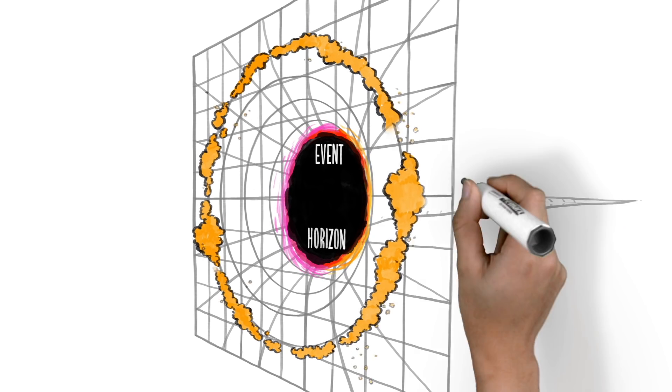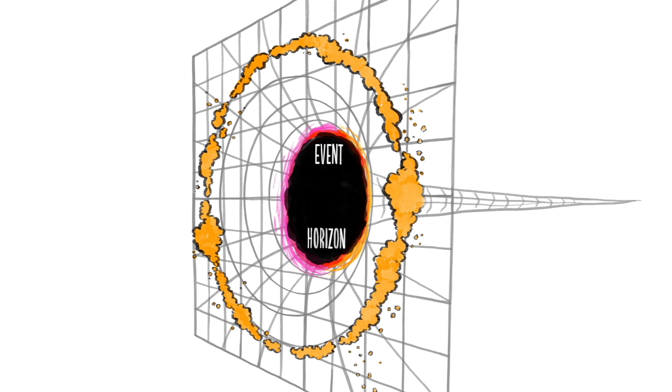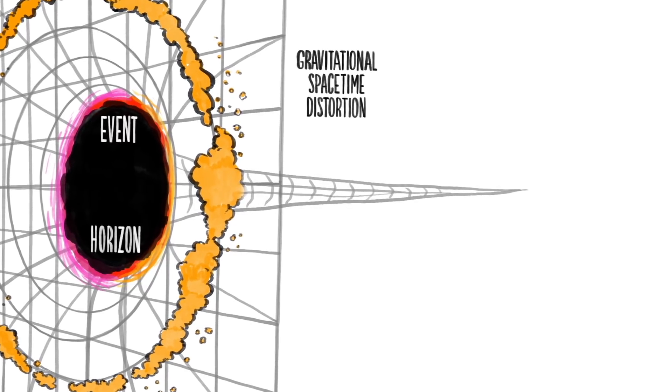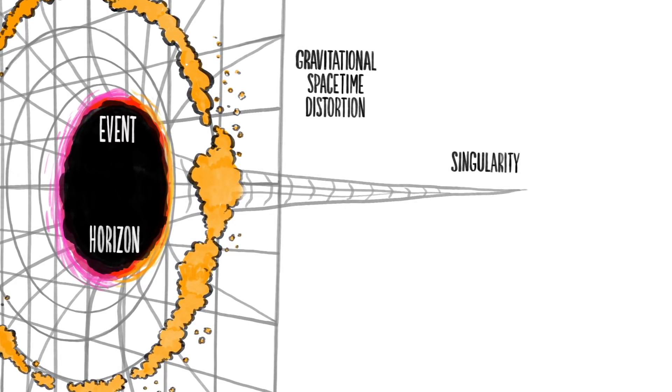At the center of a black hole, the curvature of space and time is so great that general relativity itself breaks down. This is known as a singularity. It is the boundary of our spacetime, the place where time stops.